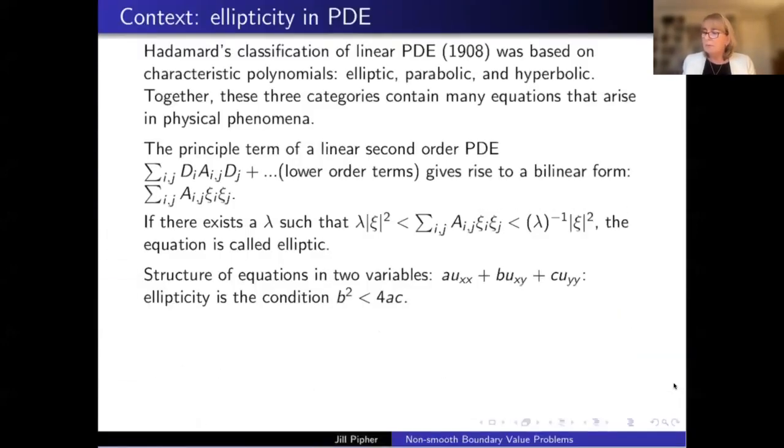And together, these three categories contain many equations that arise in physical phenomenon, but it's not every second order equation that falls in one of these buckets. So the principal term of a second order PDE is this one here. It's the one with the two derivatives. And this principal term, there might be lower order terms, but this principal term gives rise to a bilinear form where you replace the derivatives by a vector, by the i-th component of a vector. And now if there exists a lambda, a real lambda, such that this condition of positive definiteness holds, and the equation is called elliptic. And so, in other words, this bilinear form really acts very much like an inner product of the vector C with itself, and the structure of equations in two variables where ellipticity translates to this condition B squared less than 4AC gives rise to the name ellipticity.